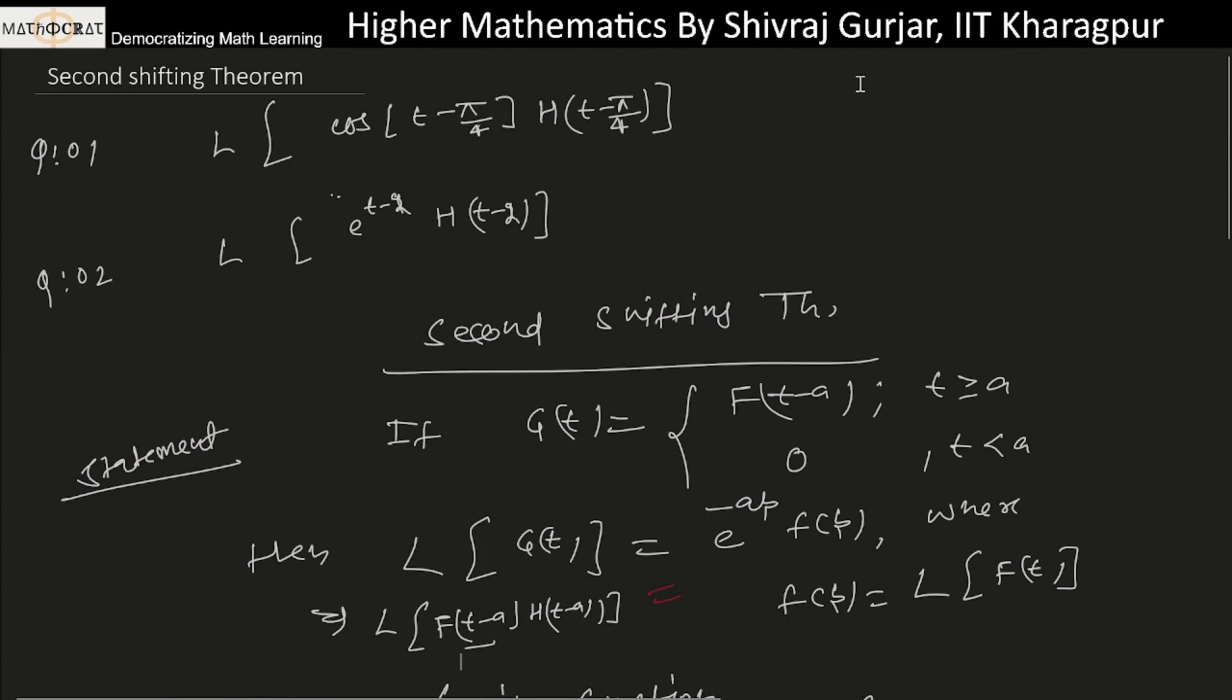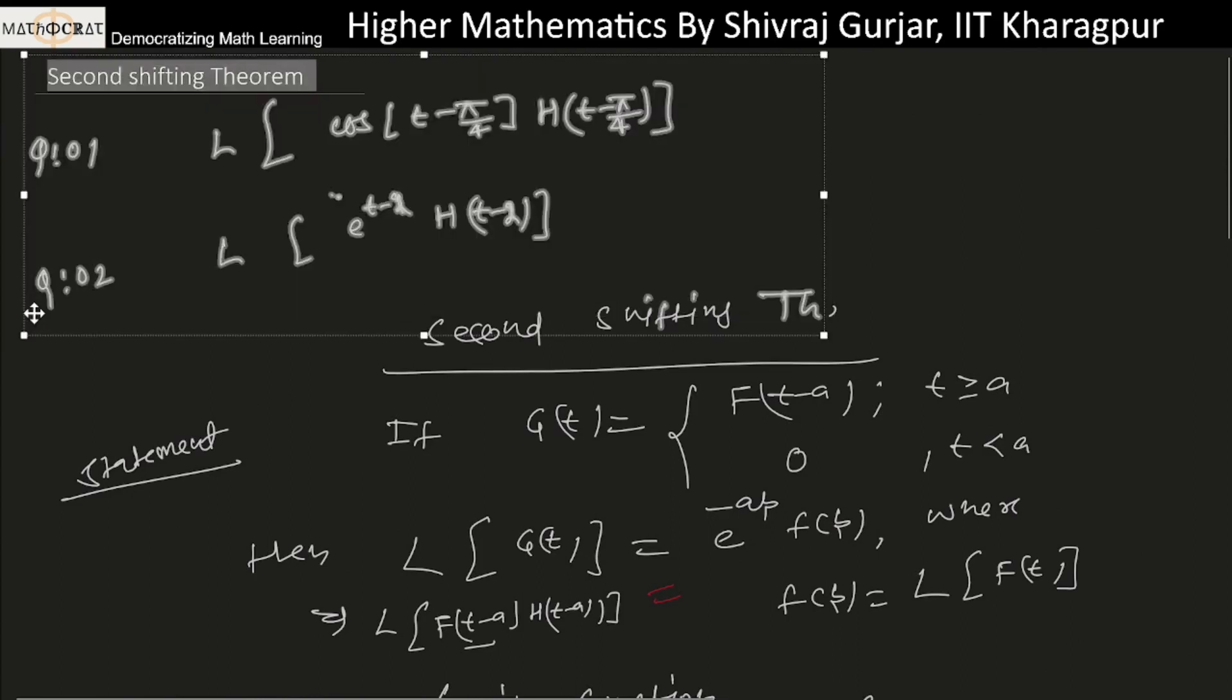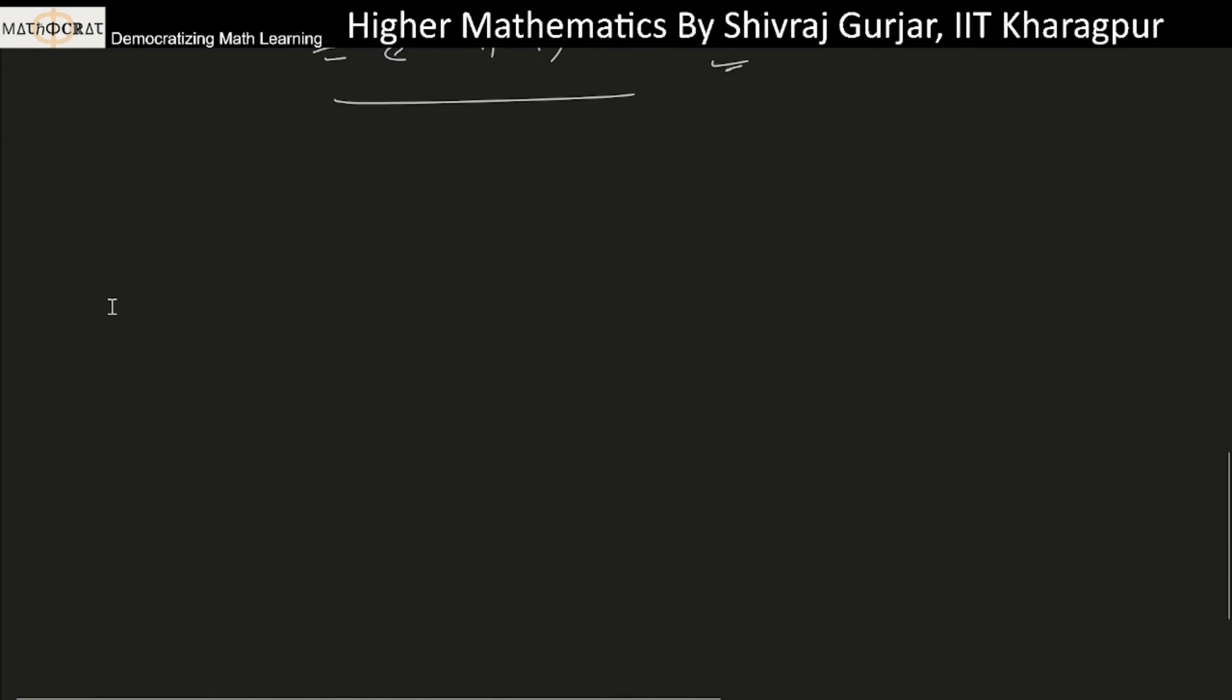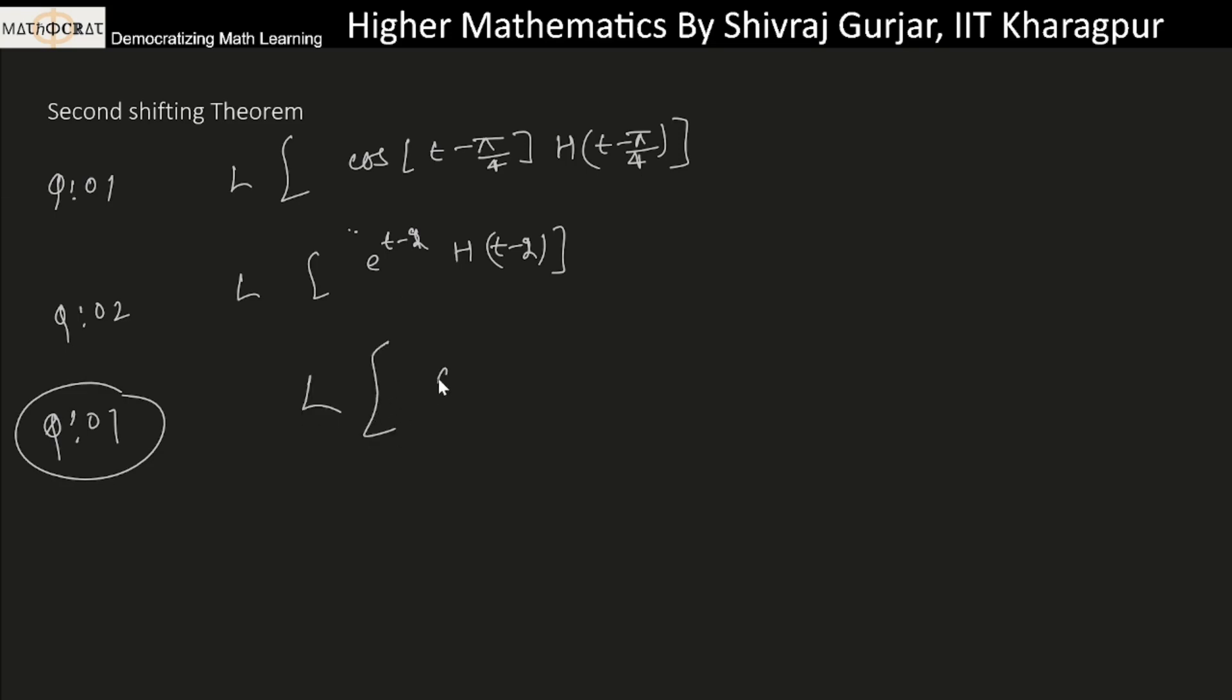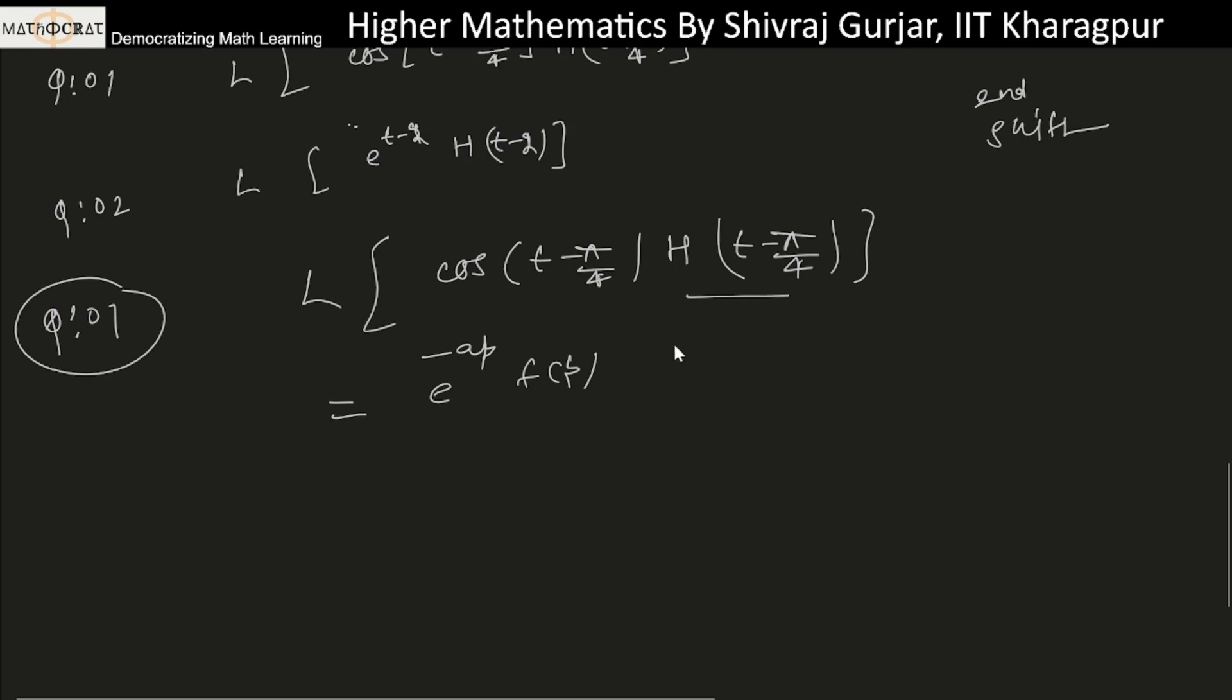So let's try some questions on this concept. Question one: Laplace of cos(t - π/4) H(t - π/4). This can be written using the shifting theorem. Compare: Laplace of F(t-a) times H(t-a) equals e^(-ap) F(p).